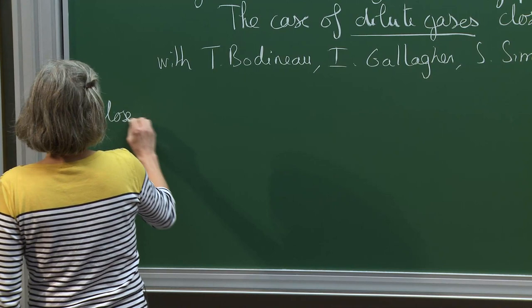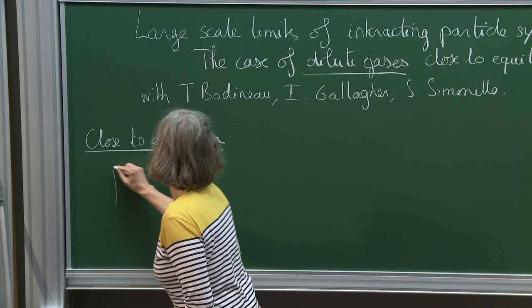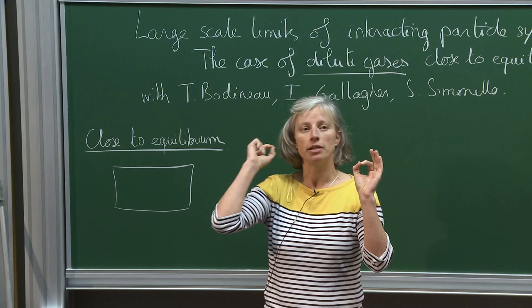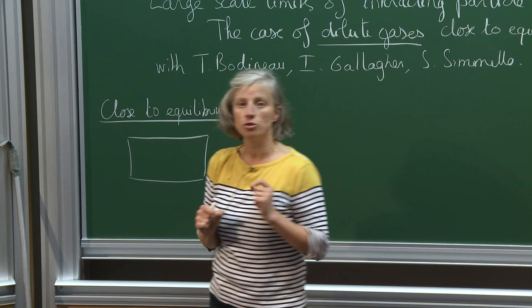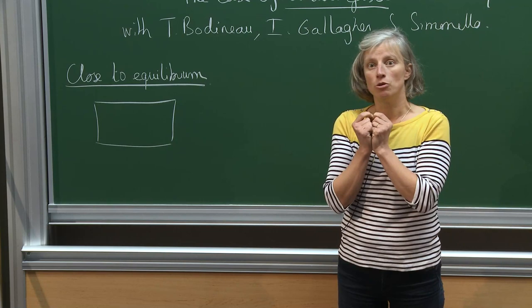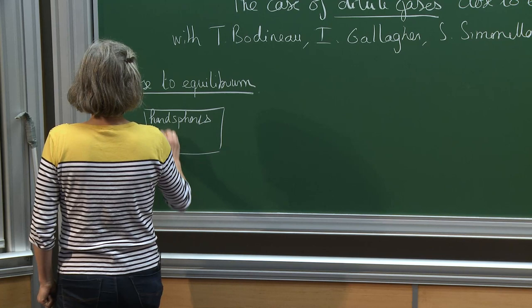Let me redo the picture close to equilibrium. At the atomic level, I take the simplest possible model: a gas of hard spheres. Particles are transported with rectilinear uniform motion until they collide, and then you have specular or elastic reflection — when two particles collide, both energy and momentum are conserved.